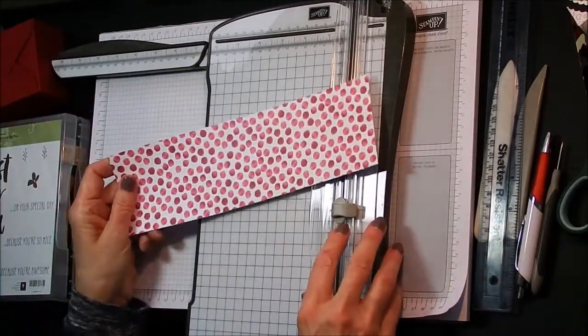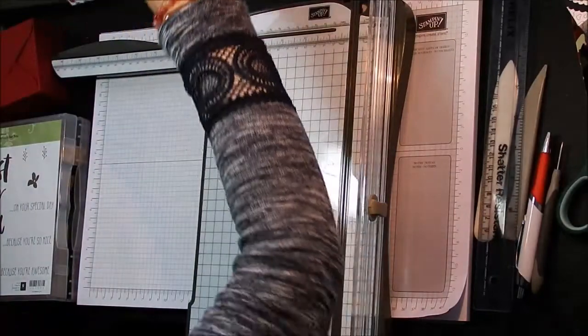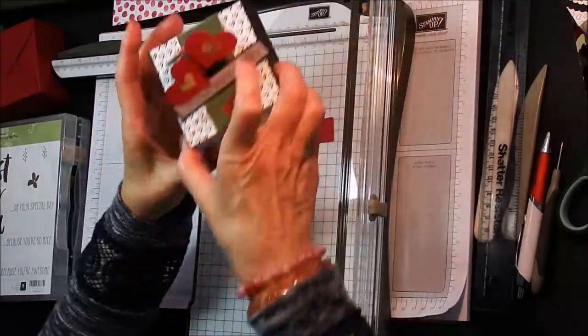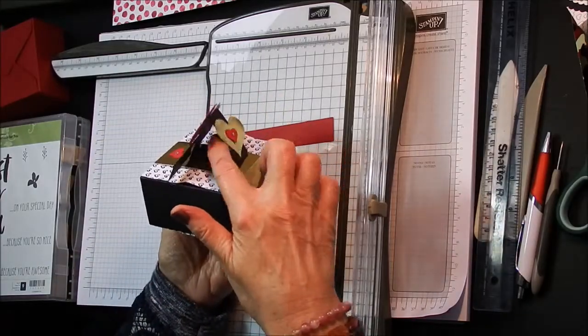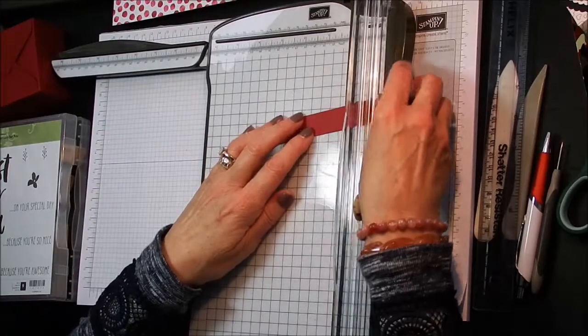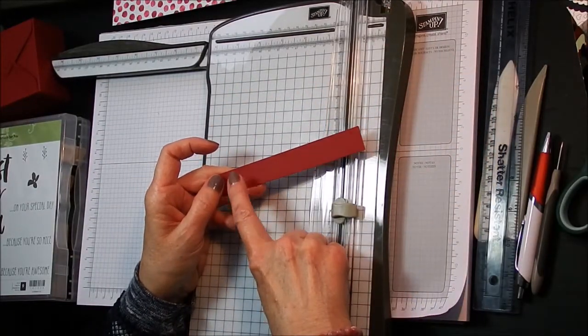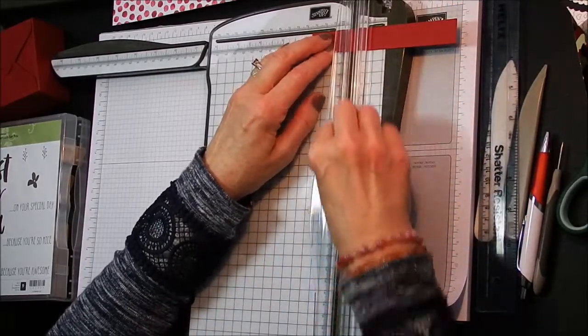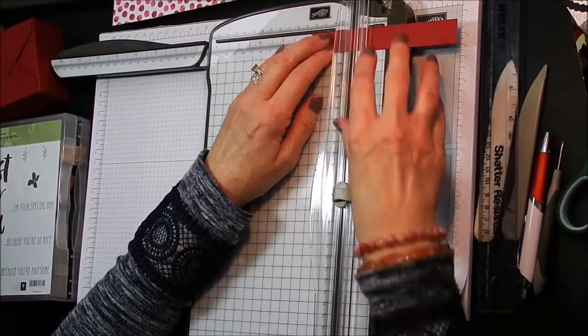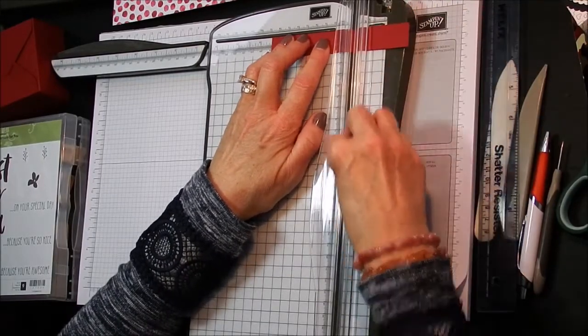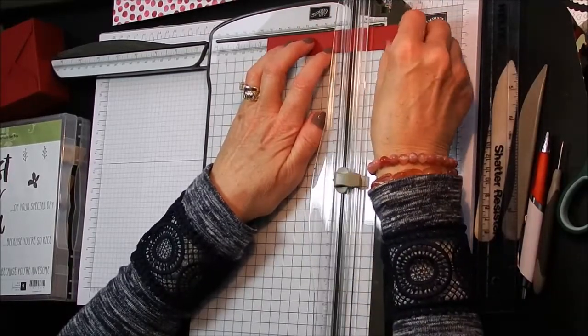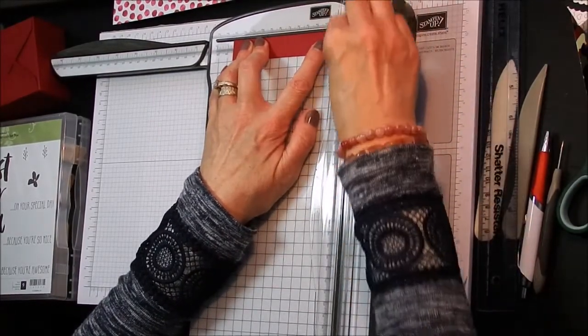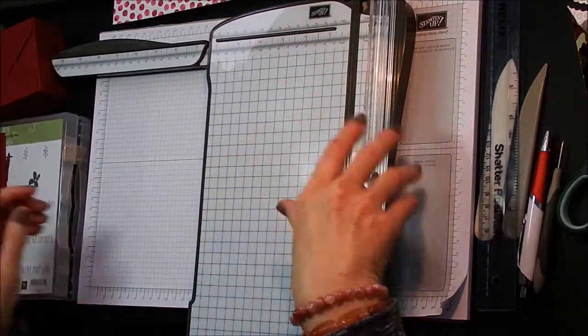And then while we're at it, I'm just going to score my little stand, my piece for my stand. This is my little stand. And that is what I mean by my little stand that just holds these little hearts up. So we're going to score that. This measures 5 and 3 quarters by 3 quarters inches, 14.7 by 1.9. And we're going to score it at 1 and 3 quarters, 3 and a half, and 5 and a quarter.